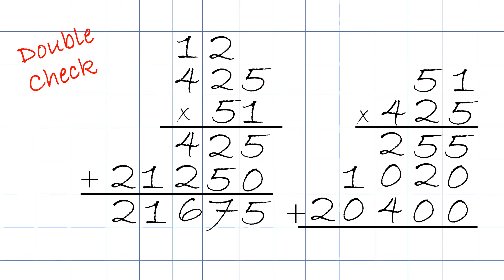Finally, we add them up, and we always start with the right column. 5 plus 0 plus 0 equals 5, 5 plus 2 plus 0 equals 7, 2 plus 0 plus 4 equals 6, 1 plus 0 equals 1, and 0 or nothing plus 2 equals 2. And they match.